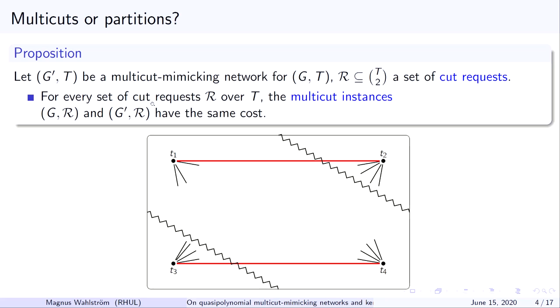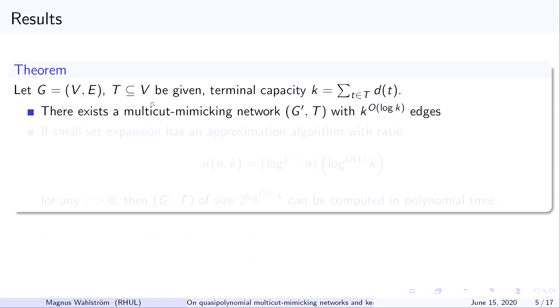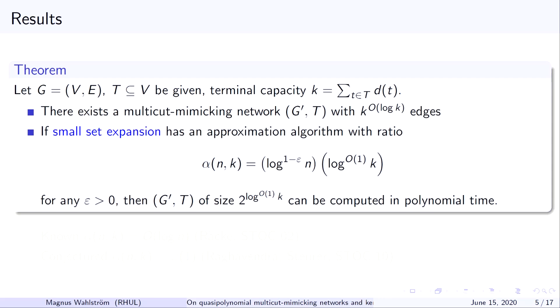Our results in terms of the total capacity k: the main result is an existence result. There always exists a multi-cut mimicking network with k to the order log k edges. And if the problem called small set expansion has an approximation algorithm with approximation ratio just slightly better than current state of the art, then some kind of a quasi-polynomial size multi-cut mimicking network can be computed in polynomial time. So we will be describing an algorithm that's constructive and almost polynomial. The only part that is not polynomial will be a sub-call to some sparse small set expansion algorithm.